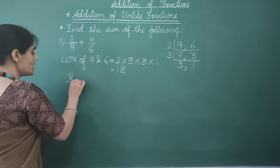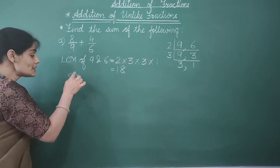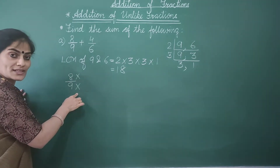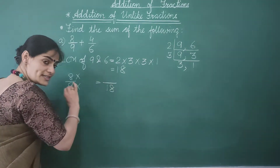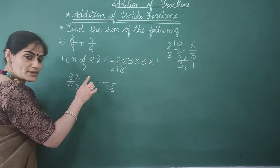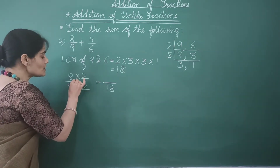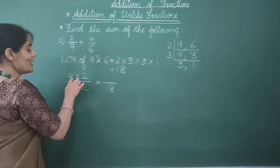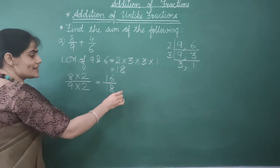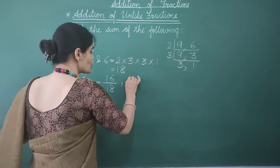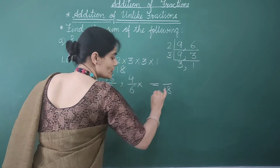First I convert 8 by 9. When finding equivalent fractions, the numerator and denominator must be multiplied by the same number. We need the denominator to be 18, so 9 should be multiplied by 2. The numerator is also multiplied by 2: 8 times 2 gives us 16, and 9 times 2 gives us 18. Similarly, we find the equivalent fraction of 4 by 6 whose denominator should be equal to 18.